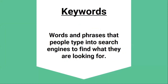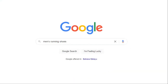So, what are keywords in the context of SEO? They are simply just words and phrases that people type into search engines to find what they are looking for. For example, if you are shopping for running shoes, you might search for keywords like men's running shoes or simply just running shoes.